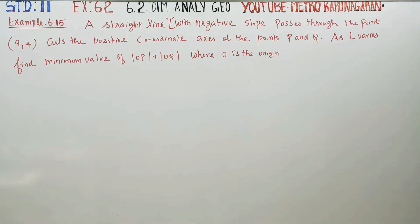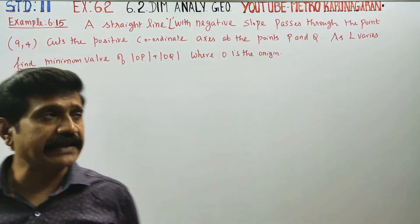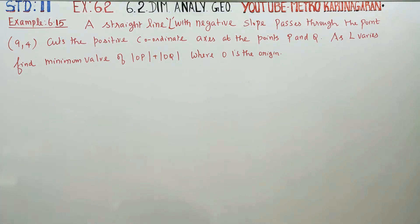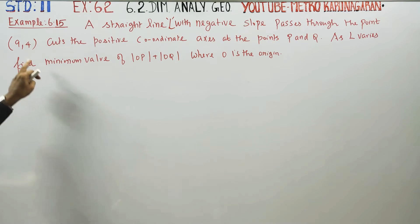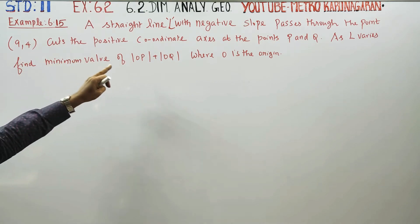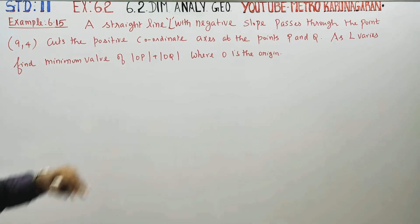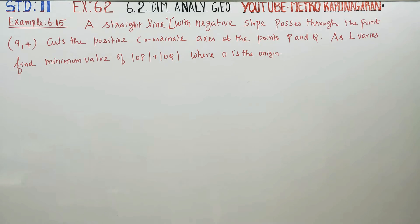Dear Learn Standard Students, I am Yetro Karanagaran. In example 6.15, a straight line L with negative slope passes through the point (9, 4) and cuts the positive coordinate axes at points P and Q.